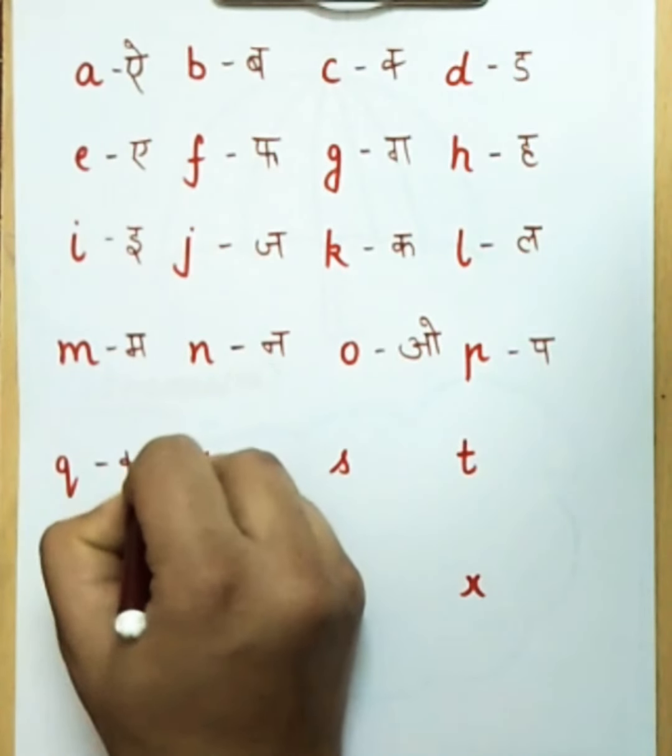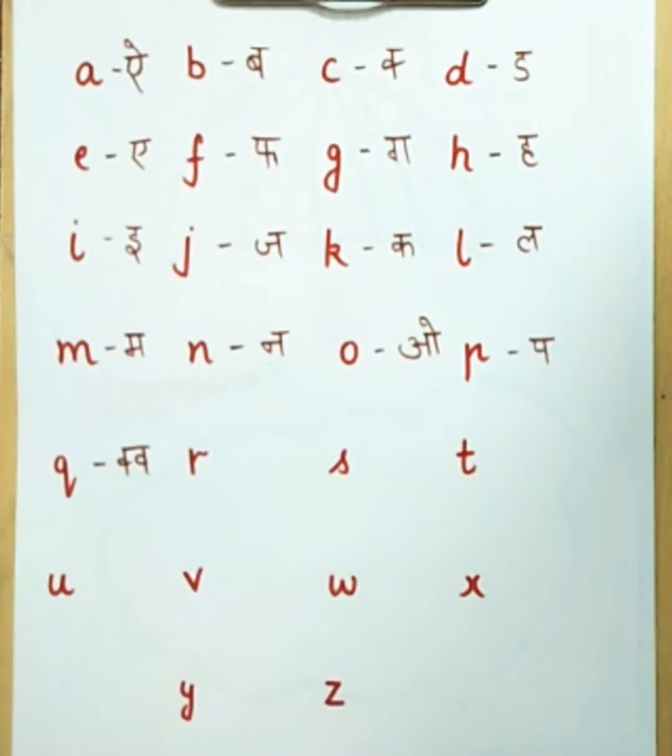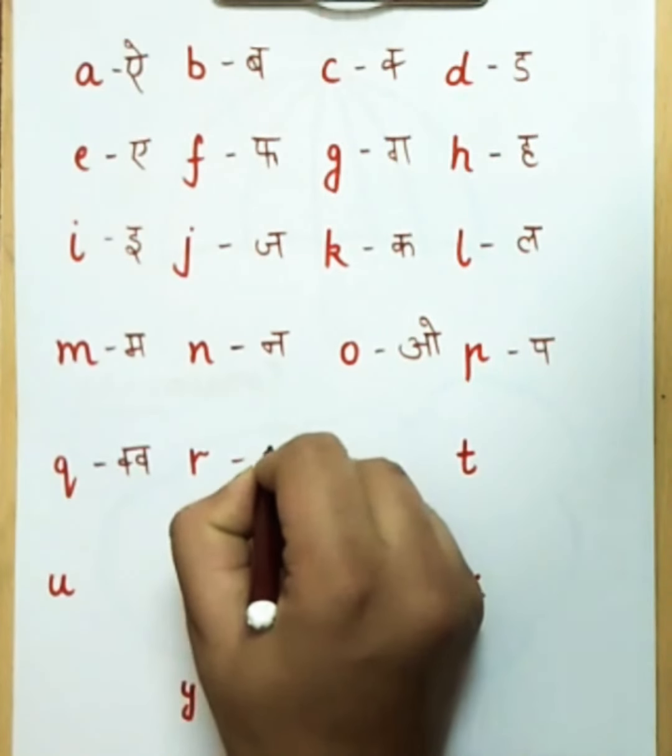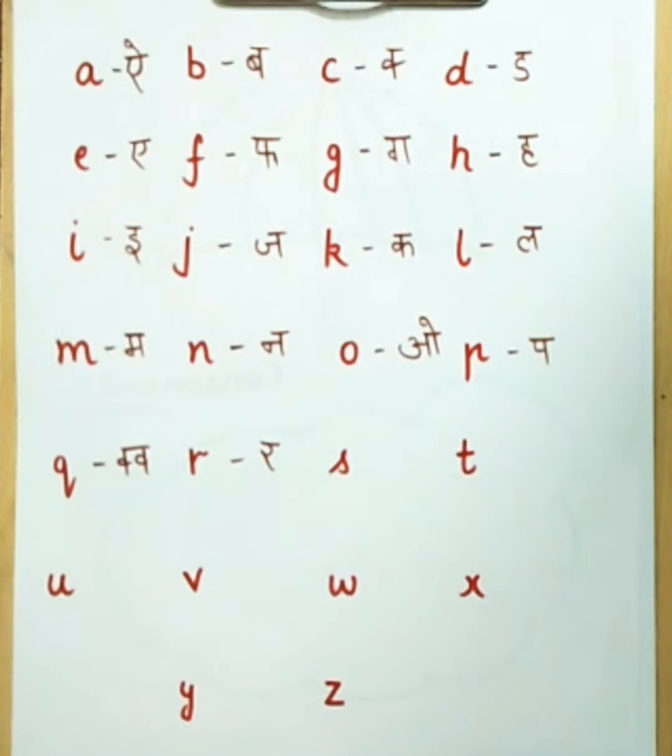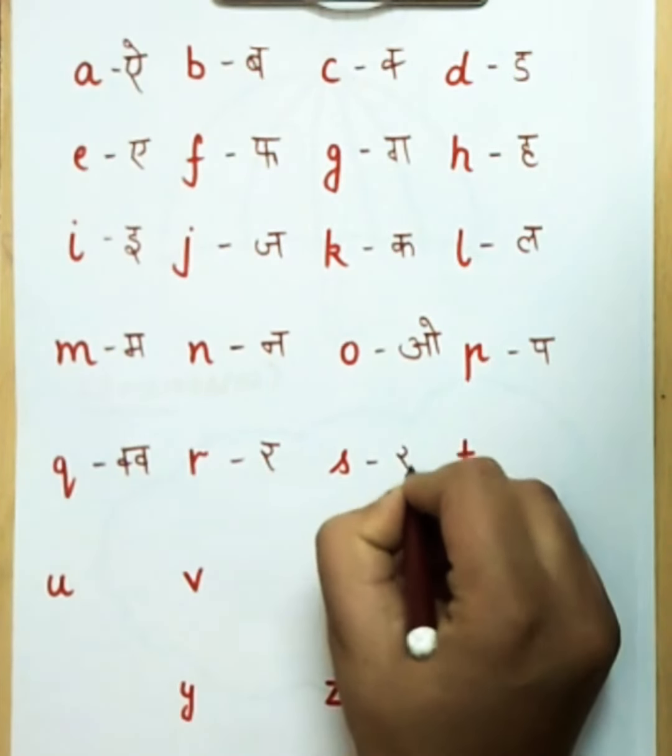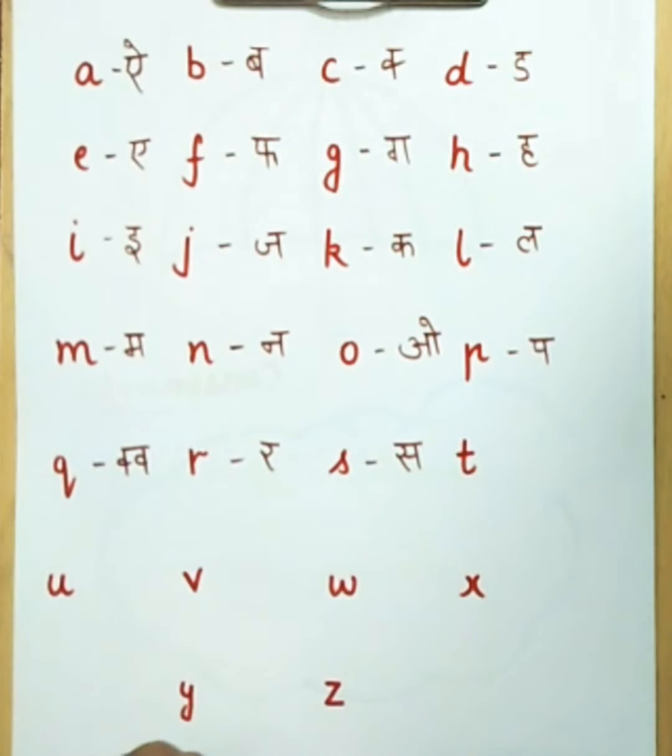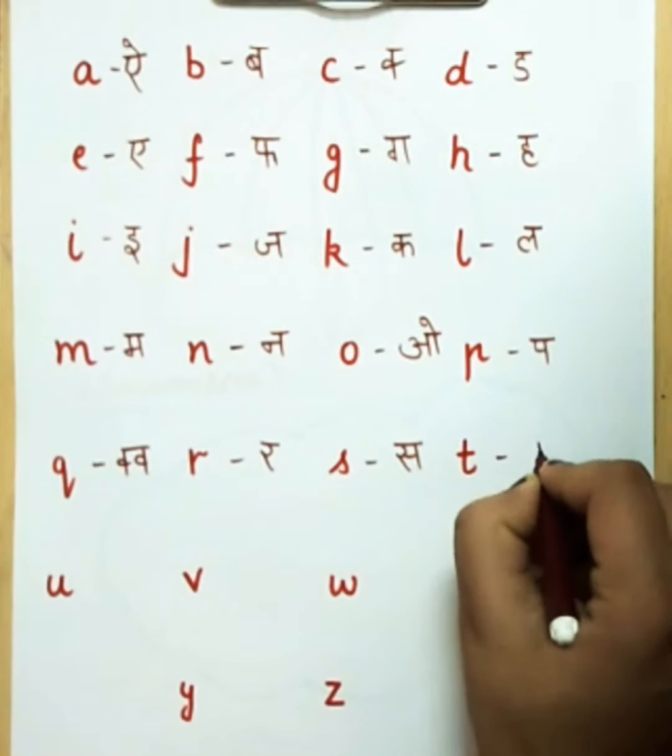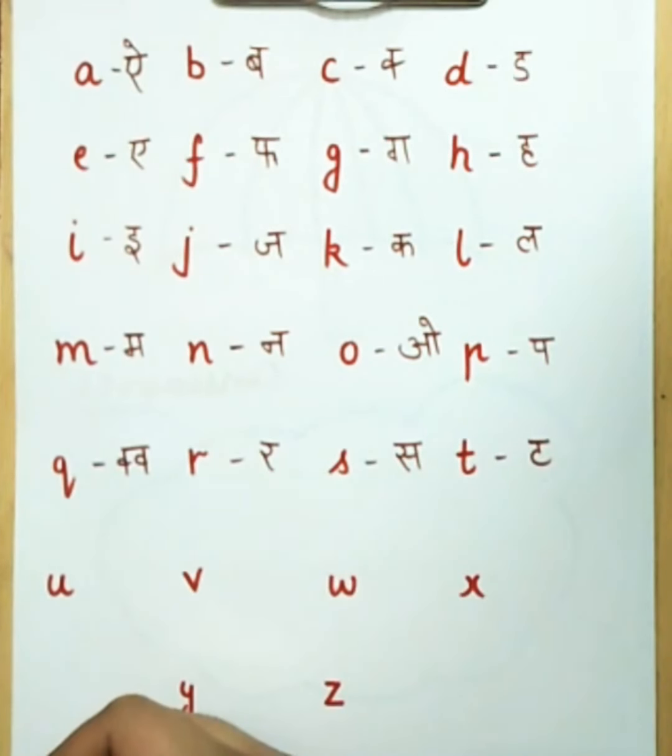Q says Q as queen. R says R as rabbit. S says S as sun. T says T as tomato.